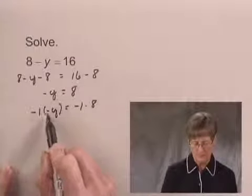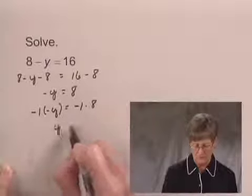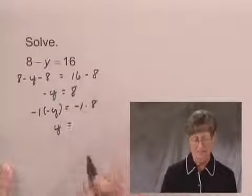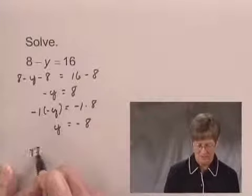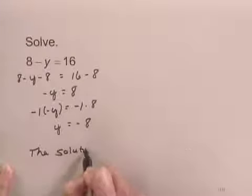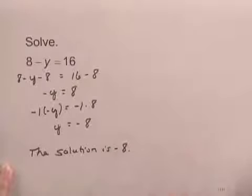Negative 1 times negative 1y is 1y, or just y, and negative 1 times 8 is negative 8. So we see that for this equation, the solution is negative 8.